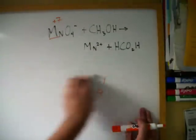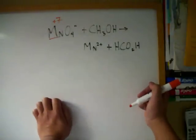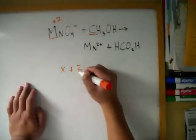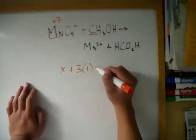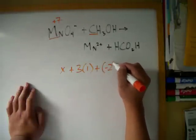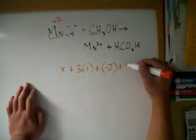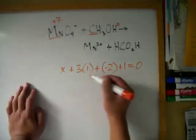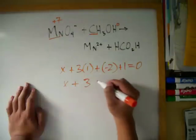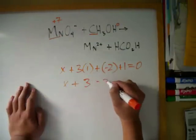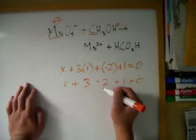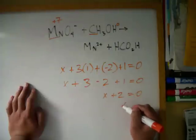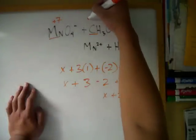Then we move on to the next element — we have to do this for all the elements in the reaction. We call C x, and we add three ones because hydrogen has a plus one charge. Then we add one oxygen's charge, which is negative two, and then another hydrogen charge, which is one. That equals a total net charge of zero. So: three x plus three minus two plus one equals zero. Three minus two is one, plus one is two, so two x plus two equals zero, and x is negative two. The charge of carbon here is negative two.